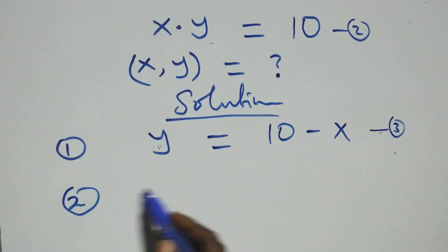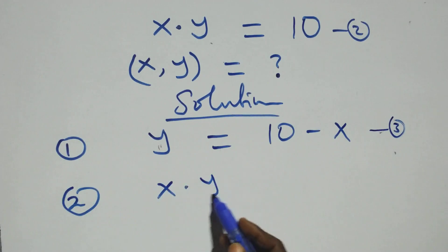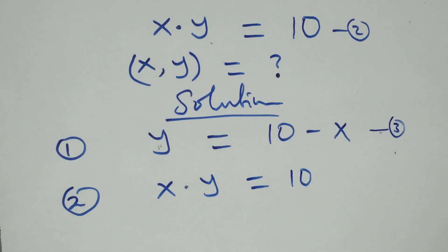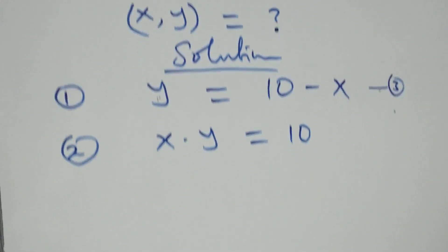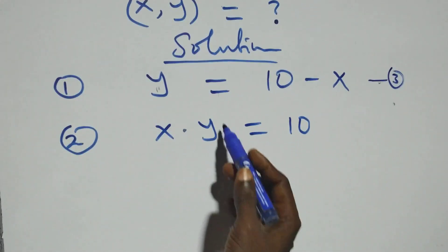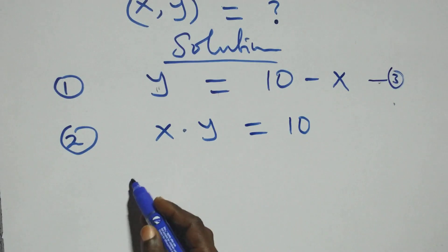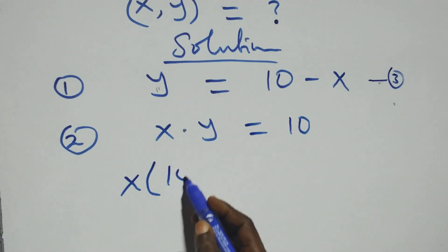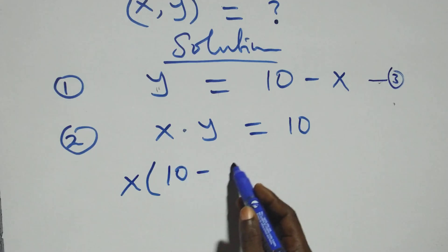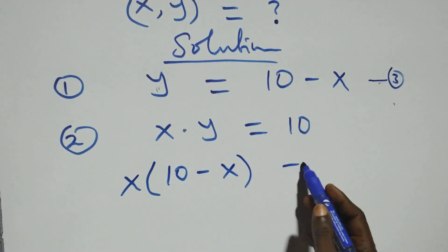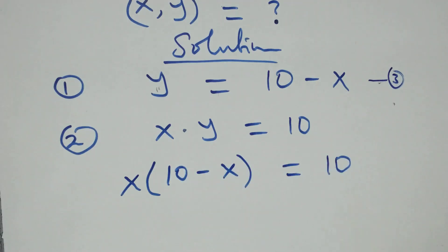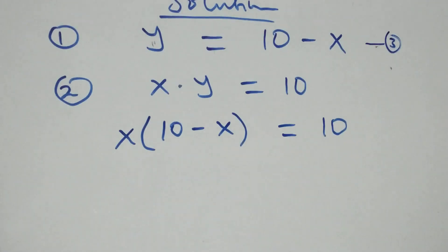From equation 2, which is x times y equals 10, we substitute equation 3 here. So x times y, which is now 10 minus x, equals 10.